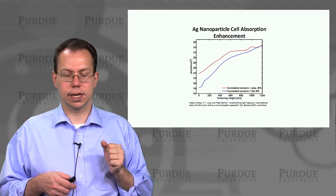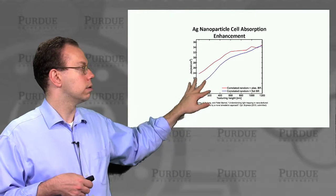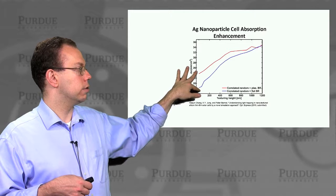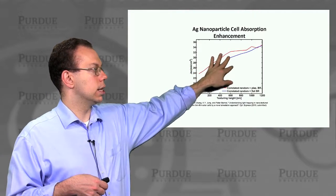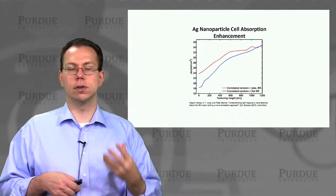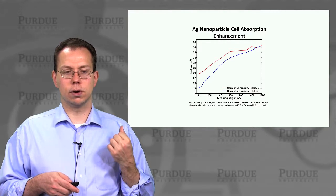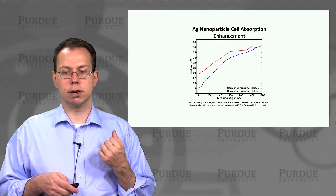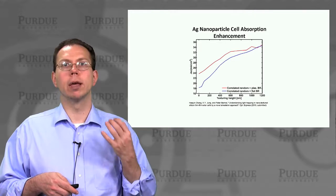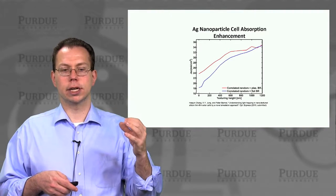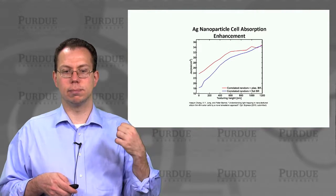If you look at this as a function of texturing height, with the plasmonic nanoparticle, especially for very short structures, there's a marked improvement. But the gap kind of closes as you increase the height to a large enough value. So that indicates that over the whole spectrum it may not be extremely beneficial for a very thick structure like a crystalline silicon wafer. But for crystalline silicon thin film where texture heights are limited to less than one micron, this could actually be a big benefit.